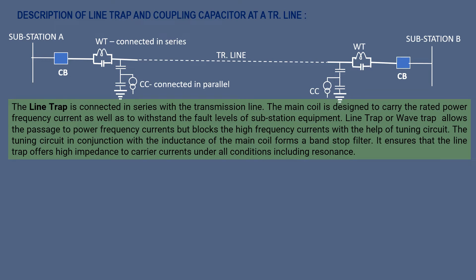The line trap is connected in series with the transmission line. The main coil is designed to carry the rated power frequency current as well as to withstand the fault level of the substation equipment. The line trap or wave trap allows the passage of power frequency current but blocks the high frequency currents with the help of a tuning circuit.